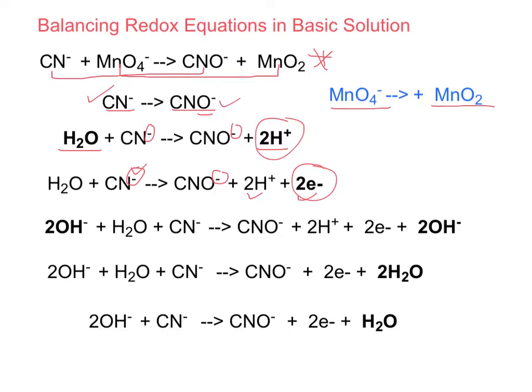Now, after I've balanced the charge, something different happens when we're talking about basic solutions. Up until this point, things have been the same as acidic solutions. But now we have to add OH- ions to neutralize these H+ ions that we added previously. What you do to one side, you do to both sides. Since I have two H+ here, I need to add two OH-. I do that to this side, so I also do it to my reactants.